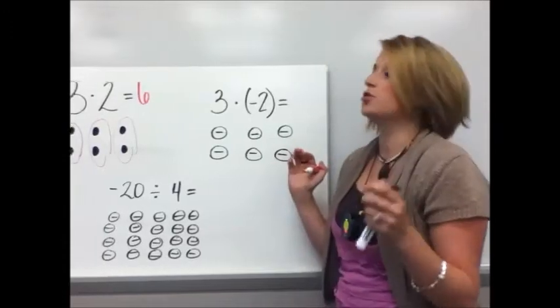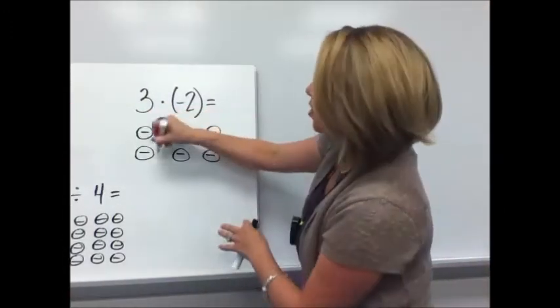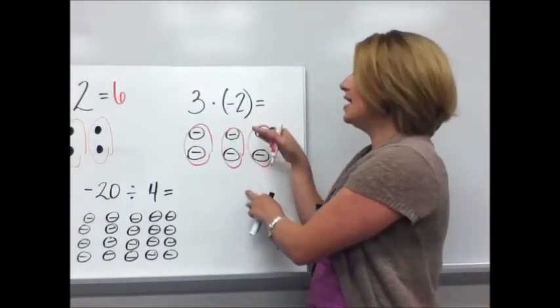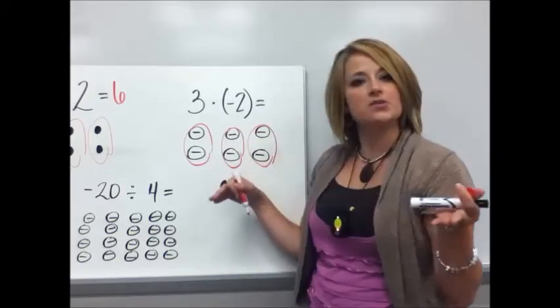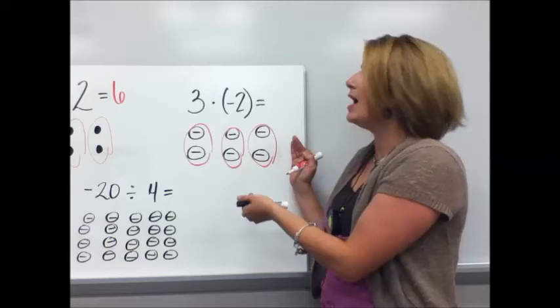Let's put this in integer world. Three times negative two. Same principle we have one, two, three groups of negative two. And if you think back to when we use counters and adding integers, if you look at it there's nothing to cancel out.